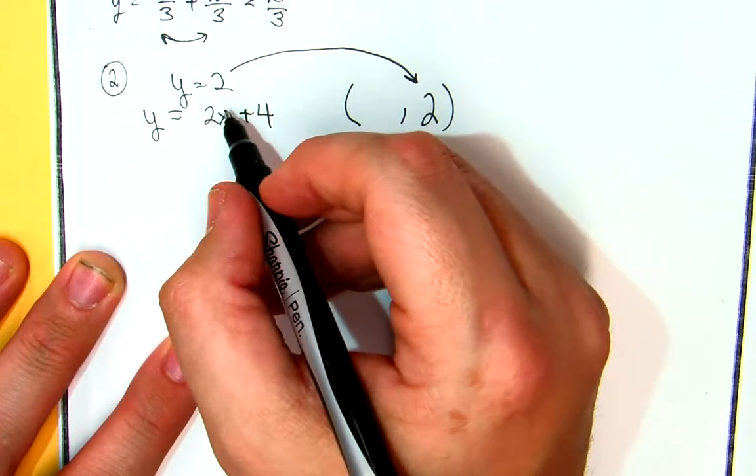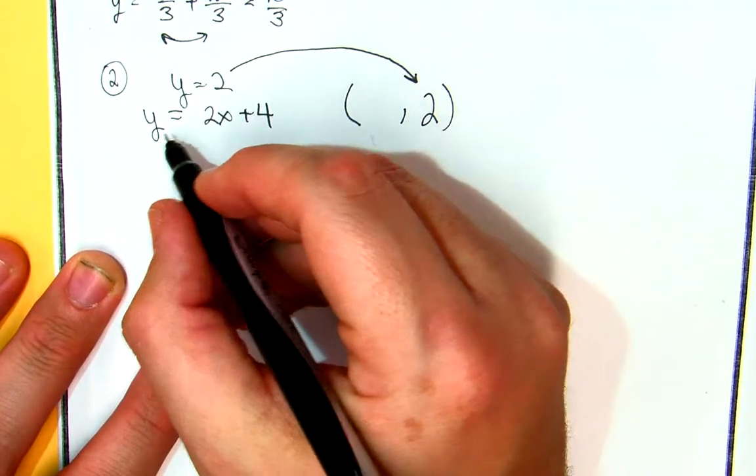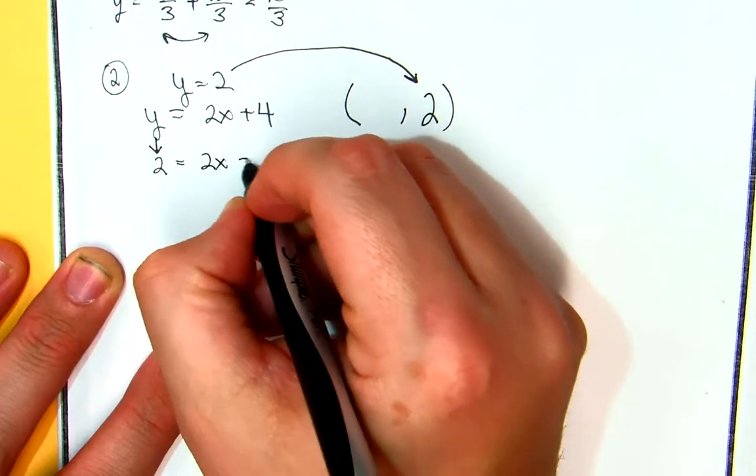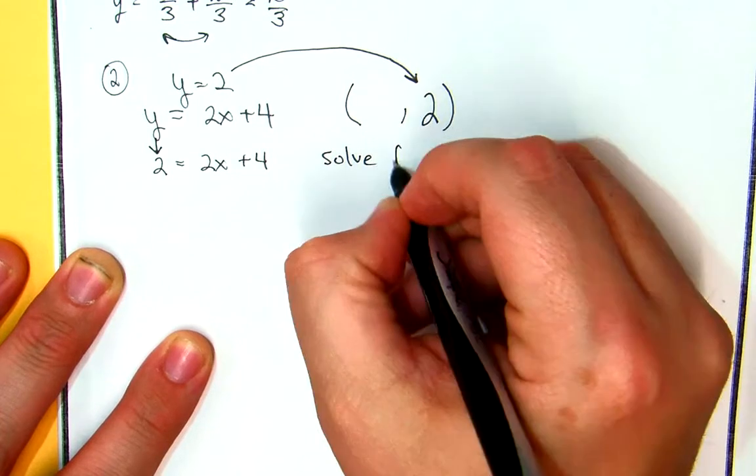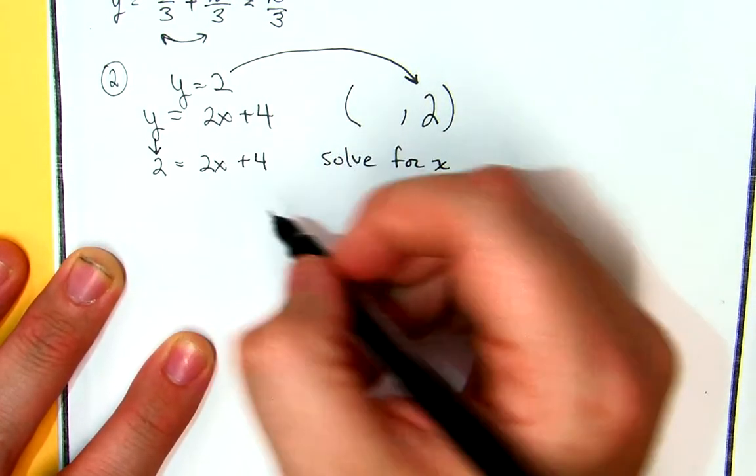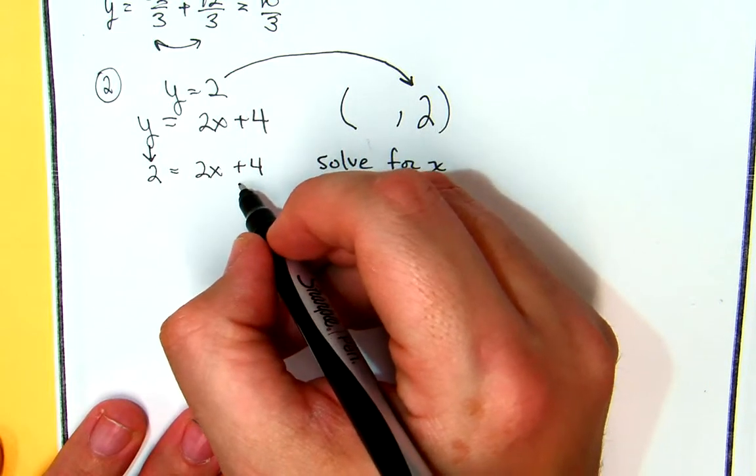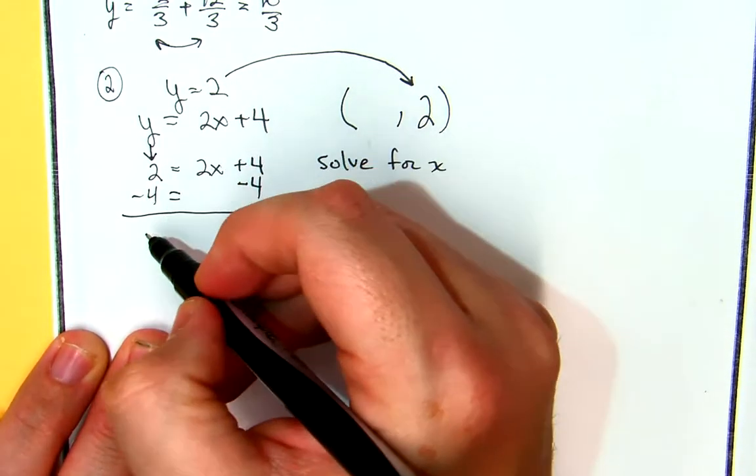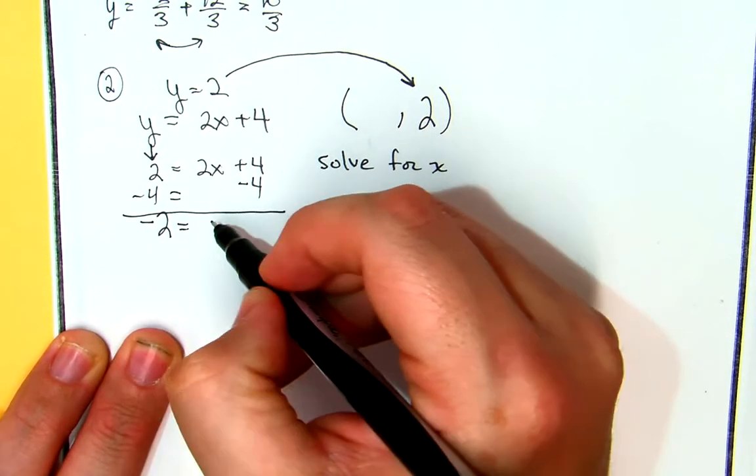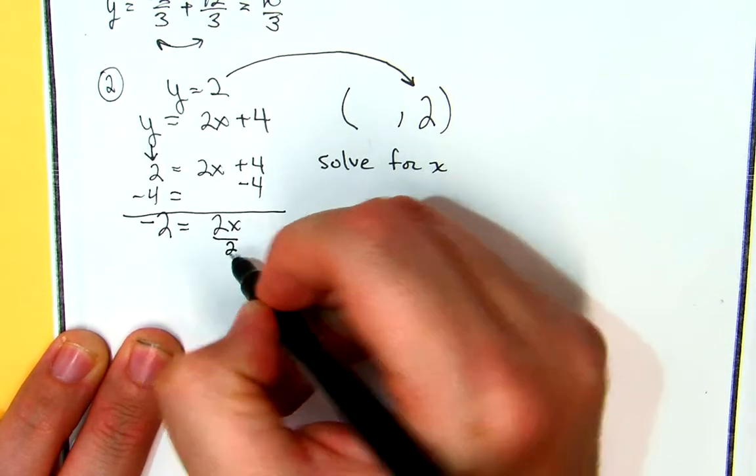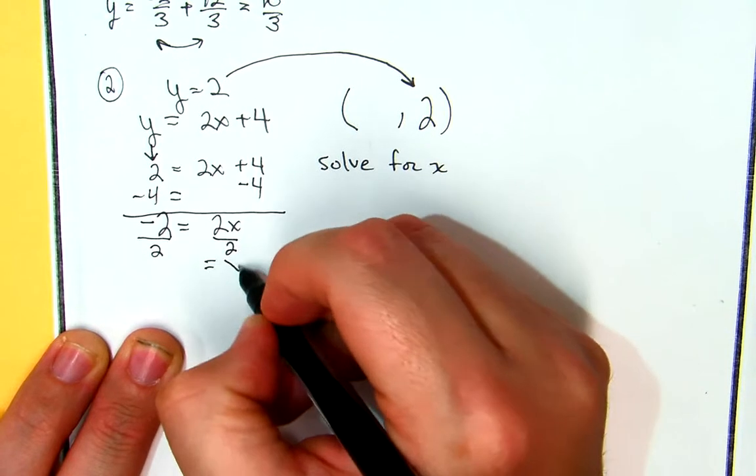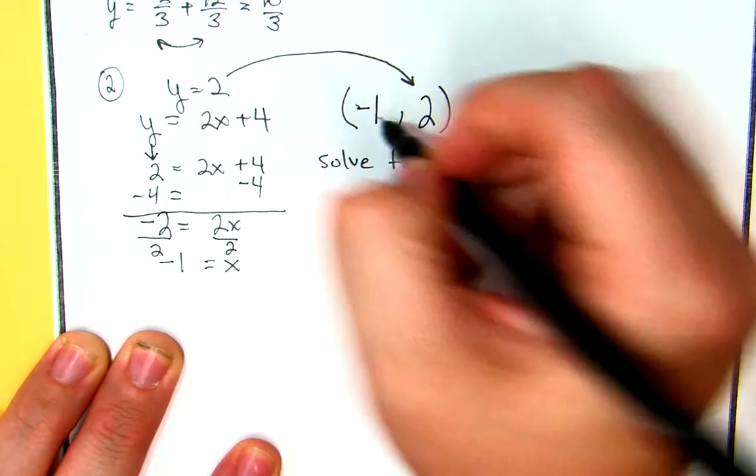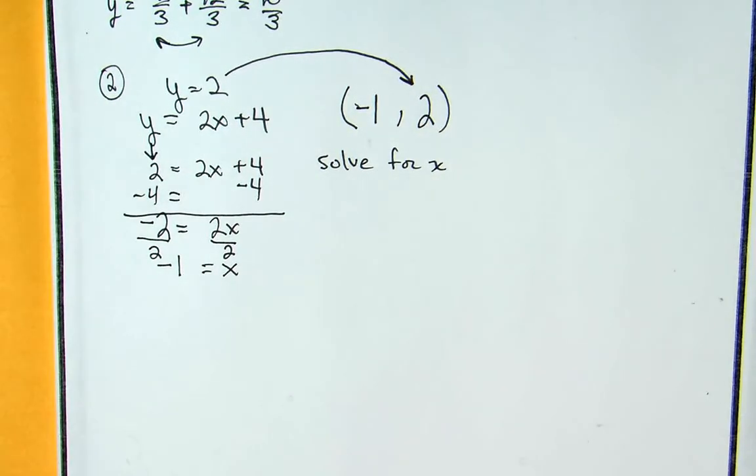I'm still going to do a substitution because I know what y is equal to. So I'm going to take this y and have that equal to 2, is equal to 2x plus 4. And now I've got to solve for x. So what am I going to do in this case? Subtract 4 from both sides. 2 minus 4 is negative 2, which is equal to 2x. Divide that by 2, divide that by 2. What do I get for my x value? What's negative 2 divided by 2? Negative 1. So I know this answer is negative 1.